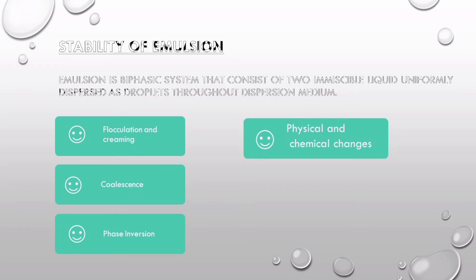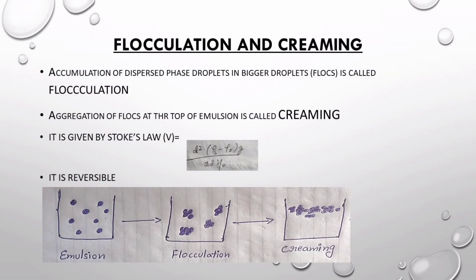As you can see in this diagram, first there is a good emulsion which has dispersed phase represented by dark spots dispersed uniformly in the dispersion medium. After some time, these dispersed phase globules come together or aggregate to form aggregations or bigger drops, also called flocs. After some time, these aggregates or flocs float to the surface of the emulsion, forming a creamy layer. This process is known as creaming.